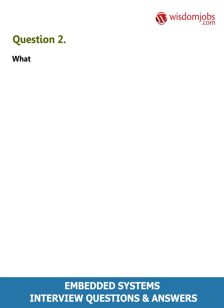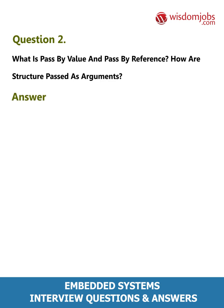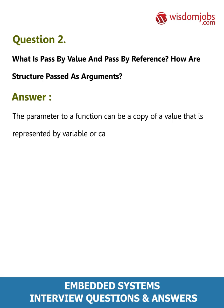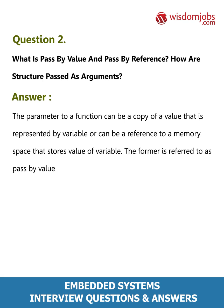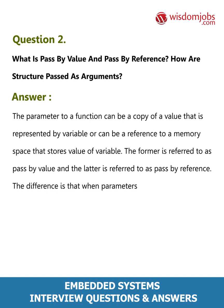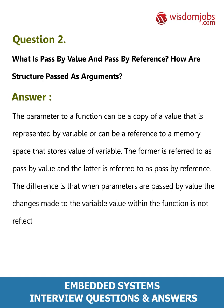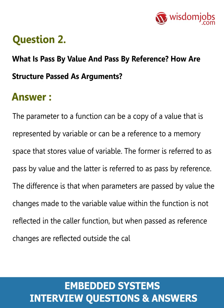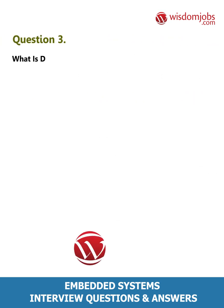Question 2: What is pass by value and pass by reference, and how are structures passed as arguments? Answer: A parameter to a function can be a copy of a value (pass by value) or a reference to a memory space that stores the value (pass by reference). When passed by value, changes within the function are not reflected in the caller. When passed by reference, changes are reflected outside. Structures are always passed by reference.